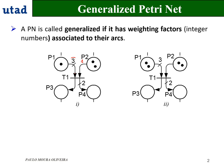The question now is how to validate and how to fire a transition in a generalized Petri Net. In this case, we need 3 tokens in P1, but we just have 1, so this transition is not validated. And we need 1 token in P2, and we got 2. So transition T1 is not validated. Also, in case 2, it is not validated because we just have 2 tokens in P1 and we need 3.